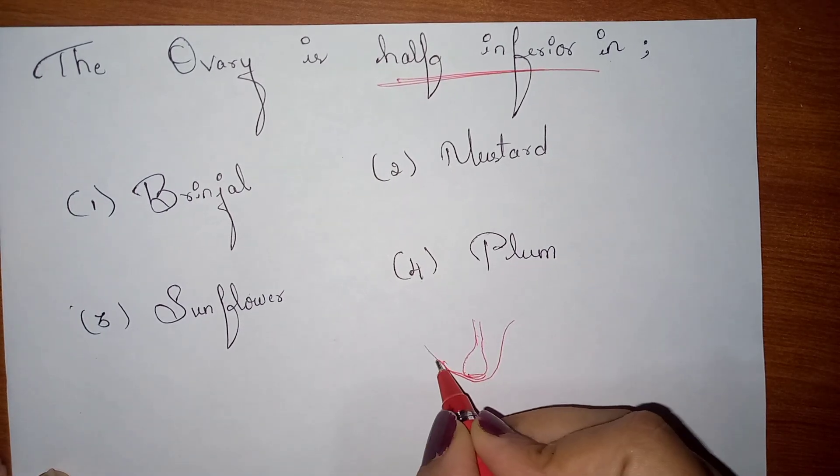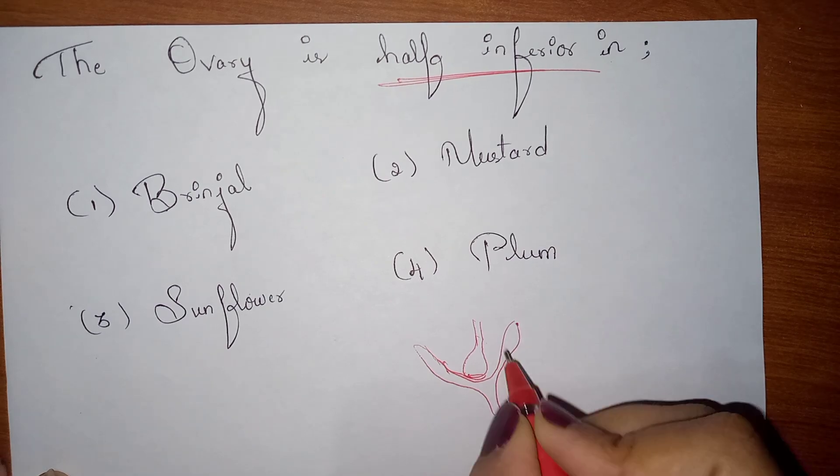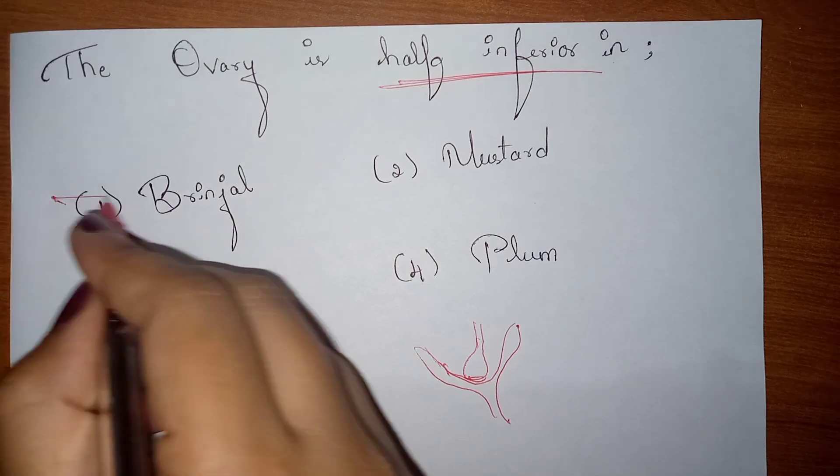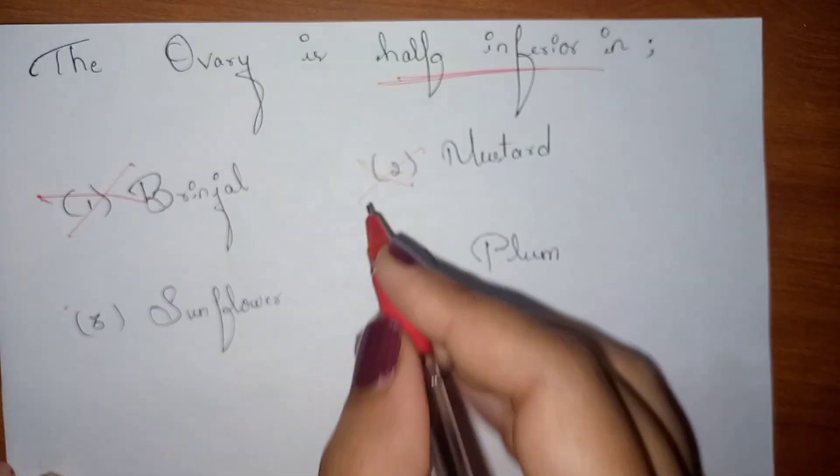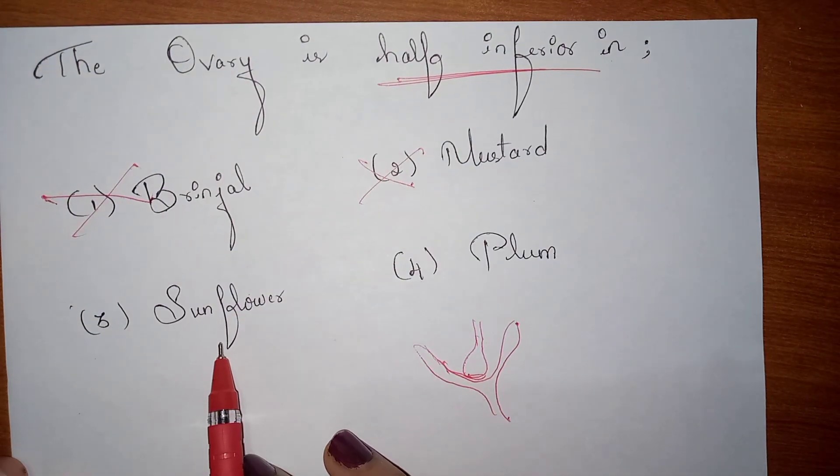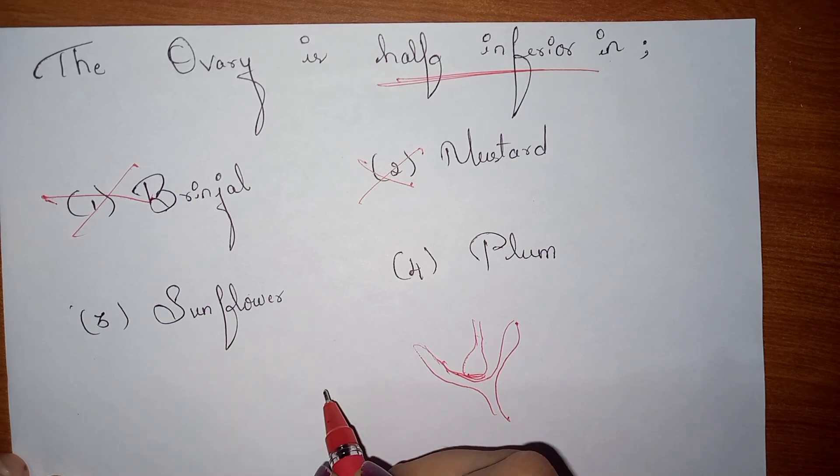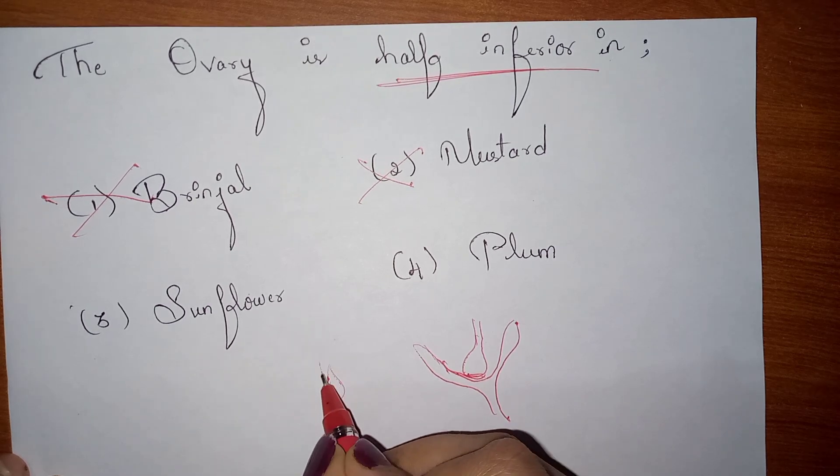In Brinjal and Mustard, we have the ovary like this - the ovary will be above the thalamus. So Brinjal and Mustard have the superior ovary, so these two are not our answer. And Sunflower, the third option is Sunflower. In Sunflower, the ovary is inferior ovary, that means the ovary will be like this, it will be covered by the thalamus.